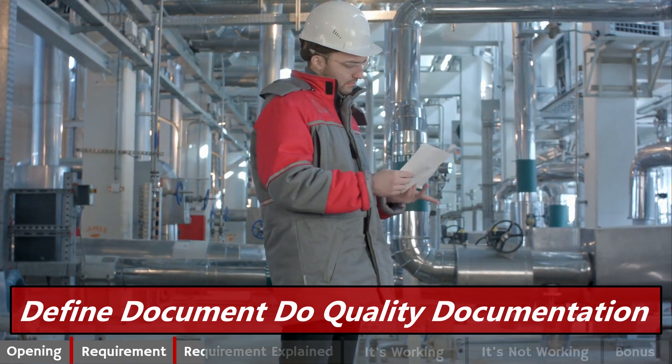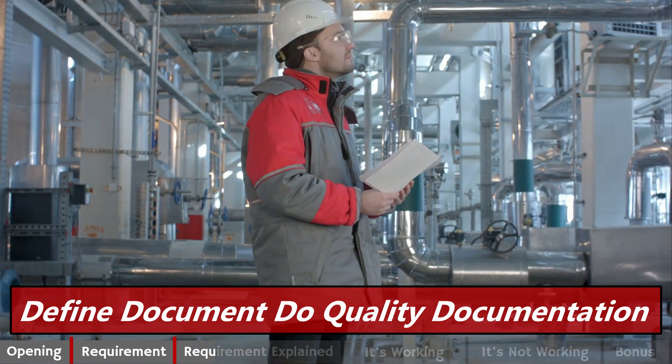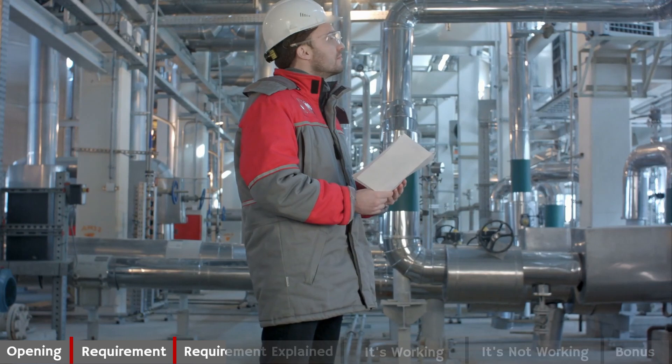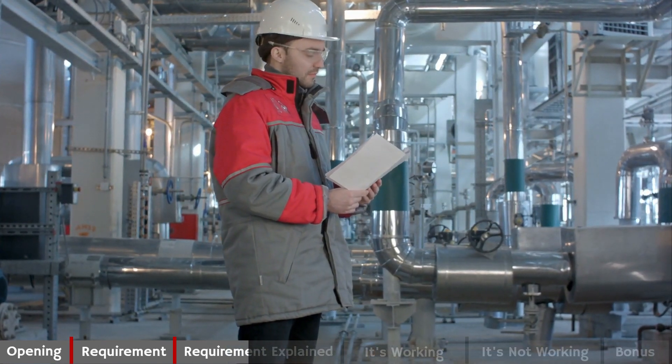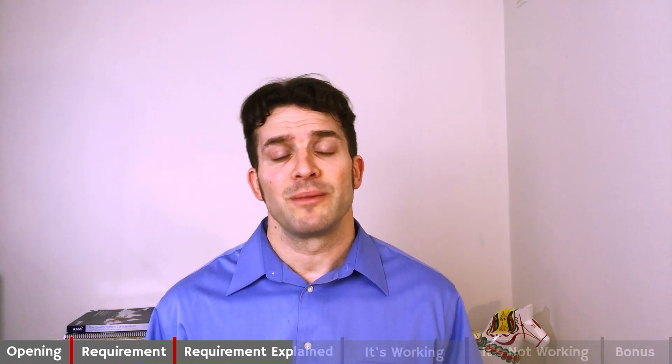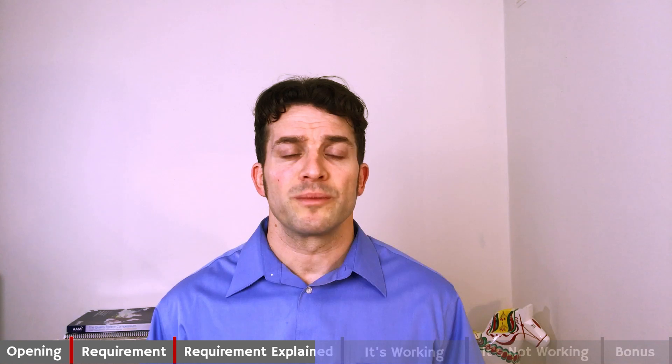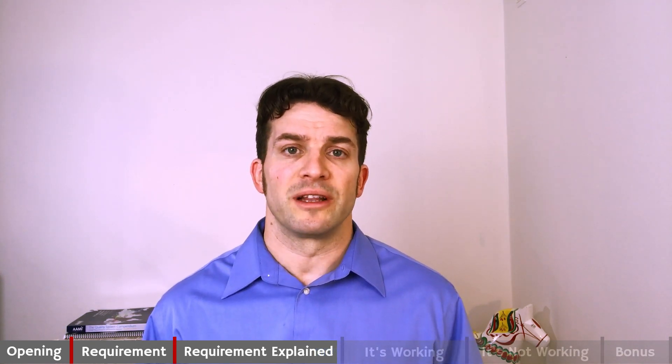Quality System Procedures in five words: Define, Document, Do, Quality Documentation. ISO has more detailed requirements here than 820. You will have a Quality Manual that outlines the documentation structure you need to implement your Quality Management System. That documentation structure will include procedures, work instructions, forms, basically anything you need to ensure that you meet the regulatory requirements.